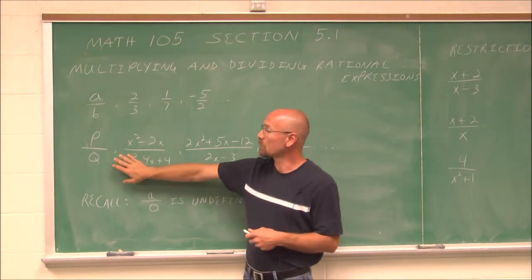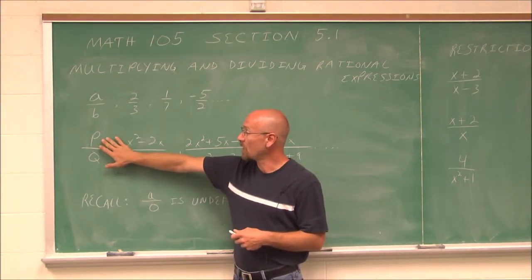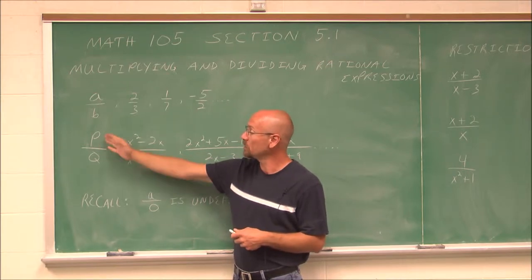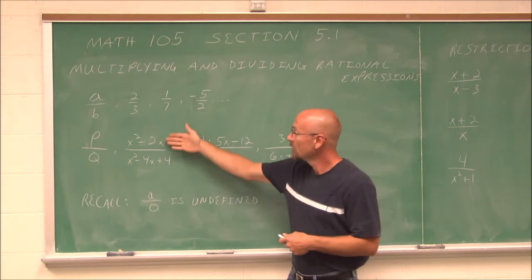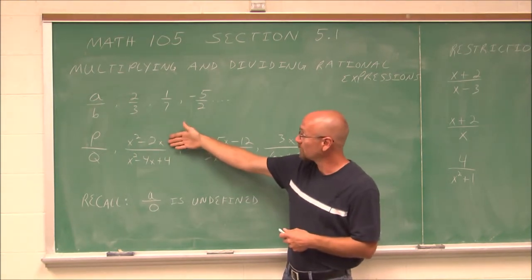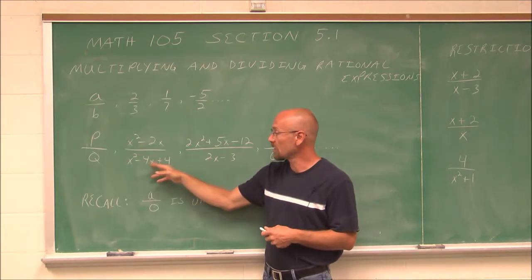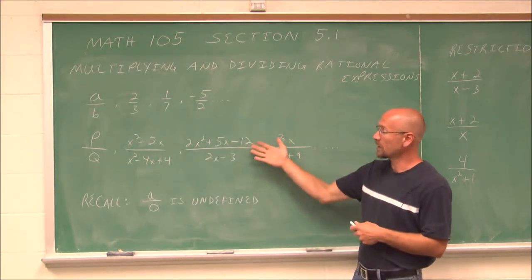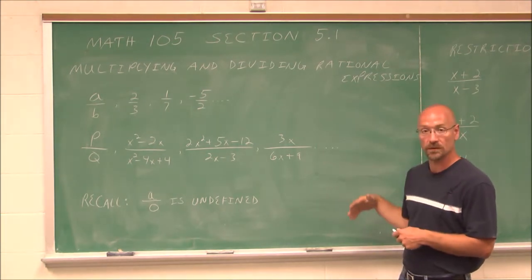When we deal with rational expressions, that's where we have a polynomial divided by another polynomial. We usually denote that as p over q, where p and q are just different polynomials. For example, x squared minus 2x over x squared minus 4x plus 4. We can have any combination of polynomial division.